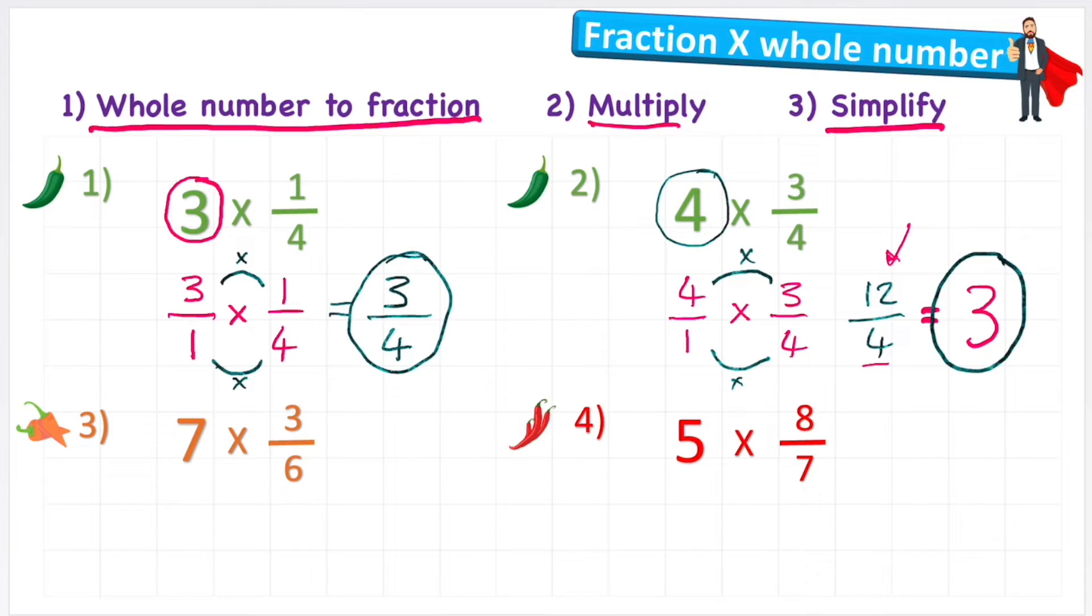Okay let's get to a bit of an orange chili challenge. And let's have a look at 7 multiplied by 3 sixths. So exactly the same process. I'm going to turn my 7 into a fraction by putting it 7 over 1 and still multiply it by my 3 sixths. Step 2 multiply. So 7 multiplied by 3 is 21 and 1 multiplied by 6 is 6.